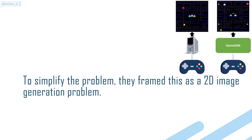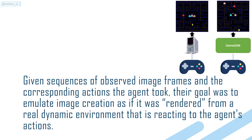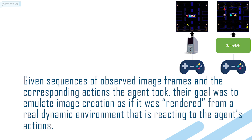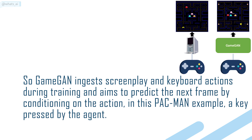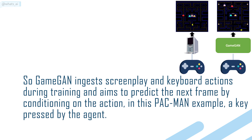To simplify the problem, they framed this as a 2D image generation problem. Given sequences of observed image frames and the corresponding actions the agent took, their goal was to emulate image creation as if it was rendered from a real dynamic environment reacting to the agent's actions. So GameGAN ingests screenplay and keyboard actions during training and aims to predict the next frame by conditioning on the action. In this Pac-Man example, an action will be a key pressed by the agent.